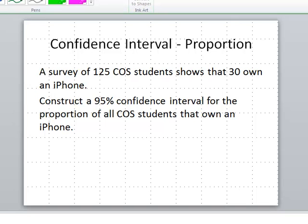First problem is a confidence interval for a proportion. Basically here, we're being asked to construct a confidence interval or give an estimate of a proportion of all COS students who own an iPhone. For a proportion, remember the data are categorical.